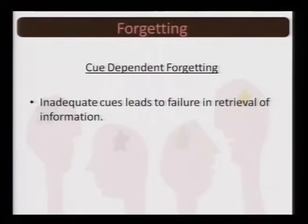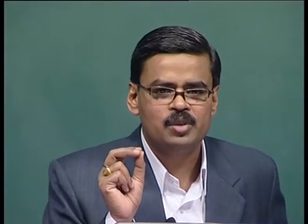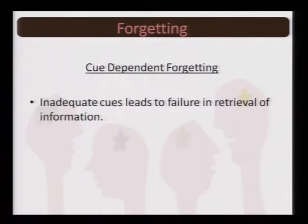Whether proactive or retroactive, the fact remains that because of interference you are not able to recollect something from your memory. The third explanation for forgetting is cue-dependent forgetting — inadequate cues lead to failure of retrieval. It's like downloading information but not giving the file a proper name or index. If you do not give the proper file name, next time you fail to find it. Inadequate cues lead to failure of retrieval — this is called cue-dependent forgetting.